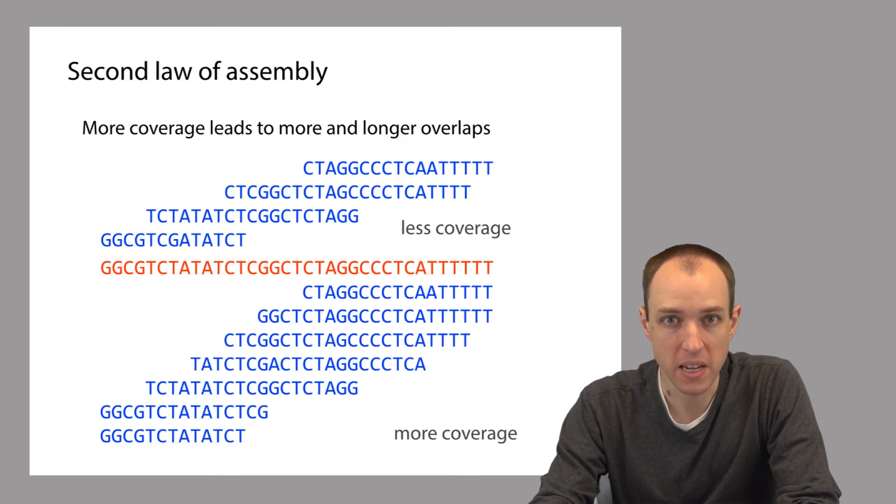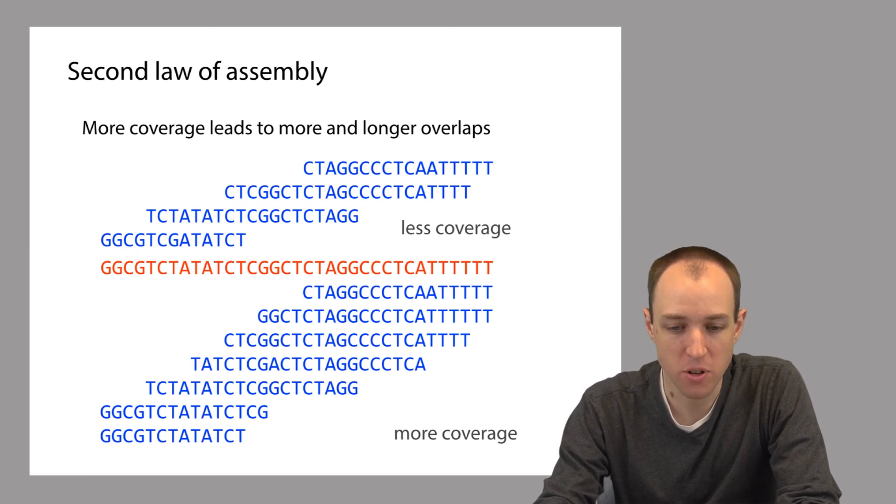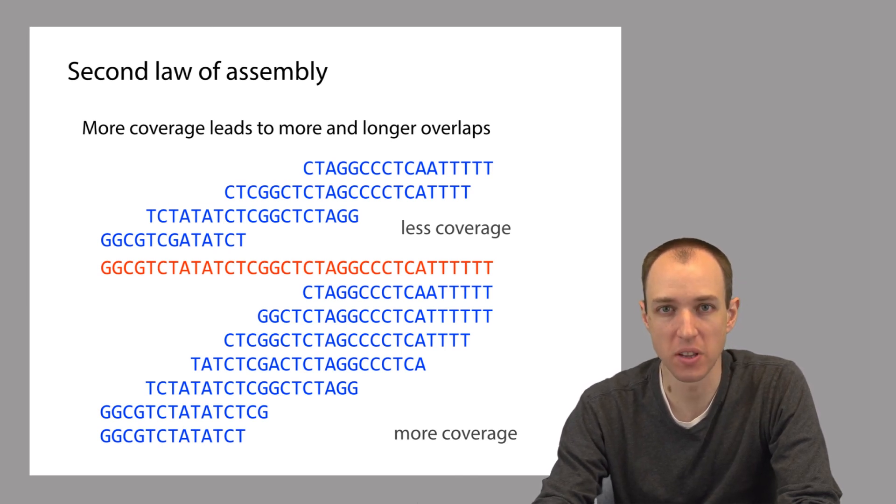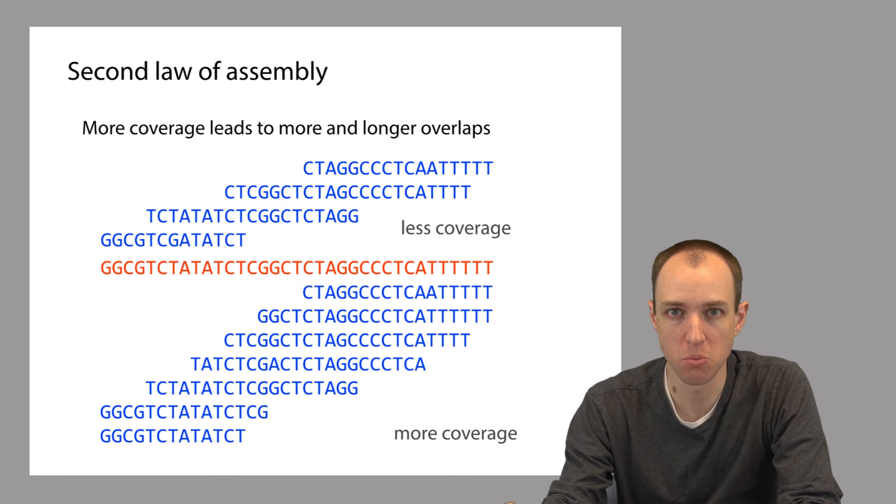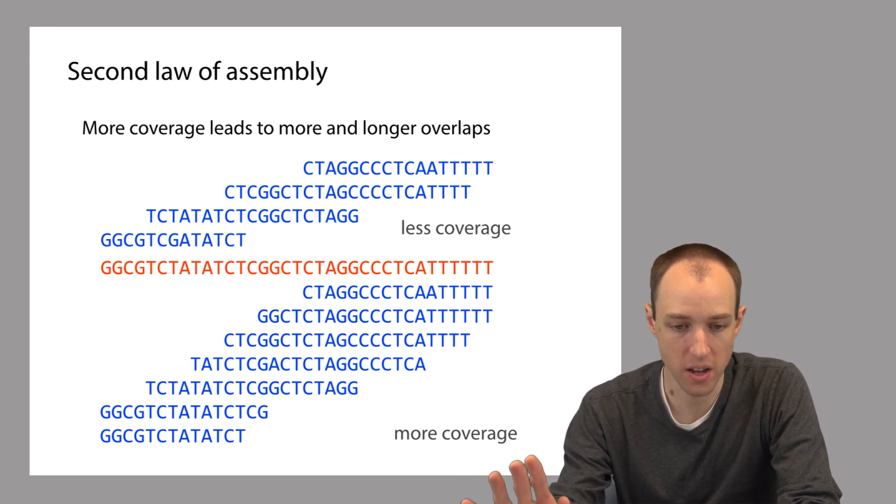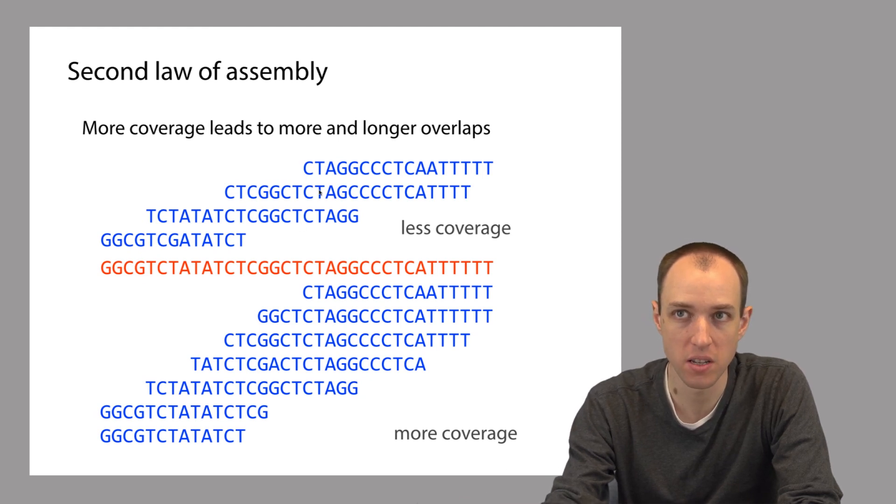Another important point to make here, and I'm going to call this the second law of assembly, is that the more coverage we have, the more and longer the overlaps we have between reads. This is important because the overlaps are the glue that we're going to use to assemble the genome. Here's an example where we have a genome shown in red, and we have two different data sets. One that's shown above the genome up here in blue, and another data set that's shown below the genome down here in blue. And the data set on the bottom has more coverage, deeper coverage than the data set on the top.